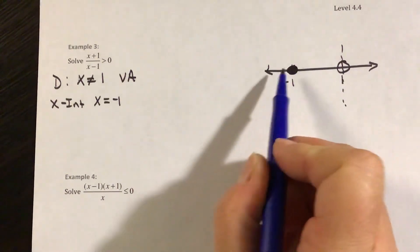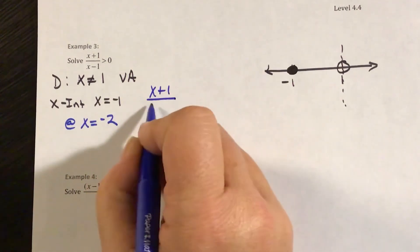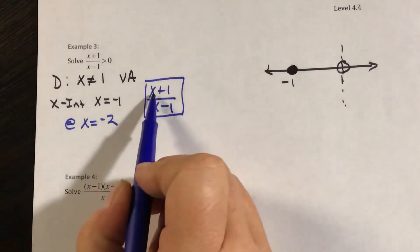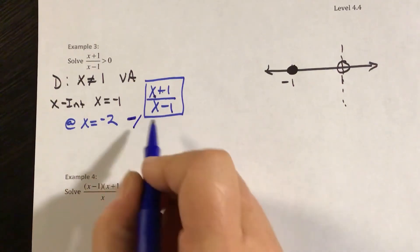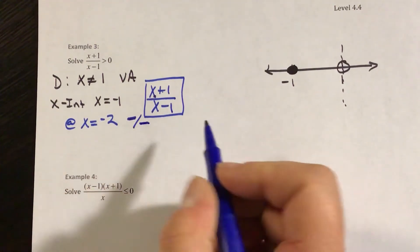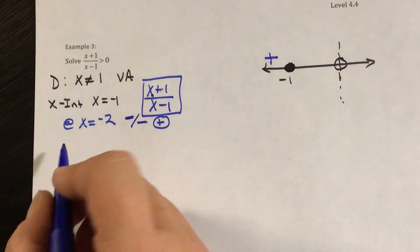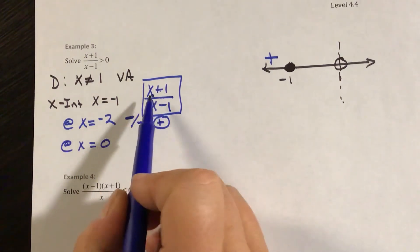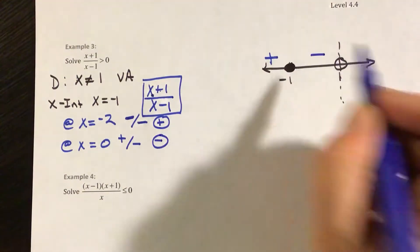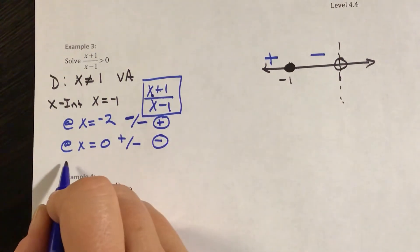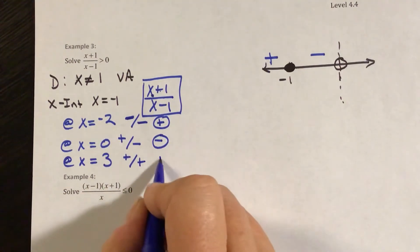I pick numbers for each region. The function is x plus 1 over x minus 1. At x equals negative 2: negative 2 plus 1 is negative 1 — negative; negative 2 minus 1 is negative — two negatives make it positive. Between negative 1 and 1 at x equals 0: 0 plus 1 is positive 1, 0 minus 1 is negative 1 — that region is negative. For a number bigger than 1, at x equals 3: 3 plus 1 is 4, positive; 3 minus 1 is 2, positive — so this region is positive.